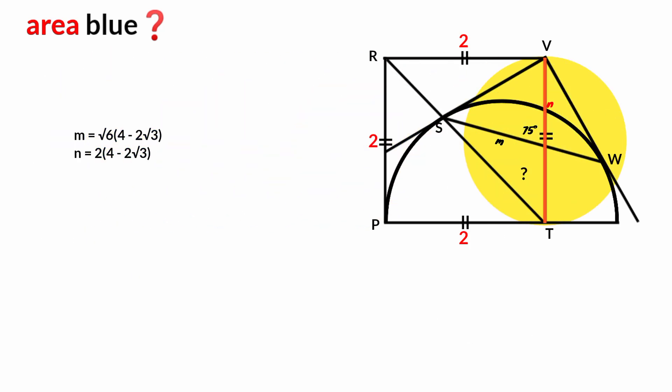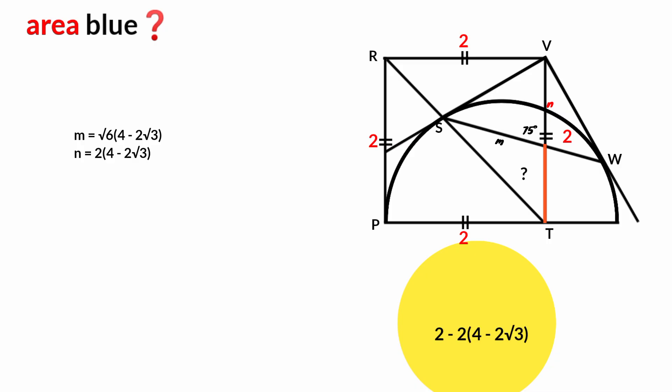Coming to this side, its length is 2 units. This part is N, so this remaining part must be 2 minus N. Substituting the value of N: 2 minus 2(4 minus 2 root 3). Factoring out 2: 2 times [1 minus (4 minus 2 root 3)] = 2 times (2 root 3 minus 3).